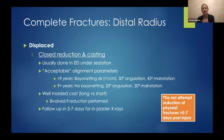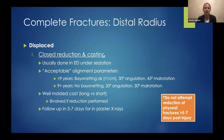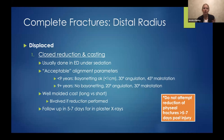For displaced fractures, there are many treatment methods. We give acceptable parameters for what's acceptable in a child and what will remodel. Under nine years old, bayoneting is acceptable, less than one centimeter of shortening, angulation, and malrotation are acceptable. As the patient gets older, you accept less and less. A well-molded cast is very important, and bivalving if reduction is performed to prevent compartment syndrome concerns. I see them back at five to seven days in plaster. We do not attempt late reductions for physeal fractures.